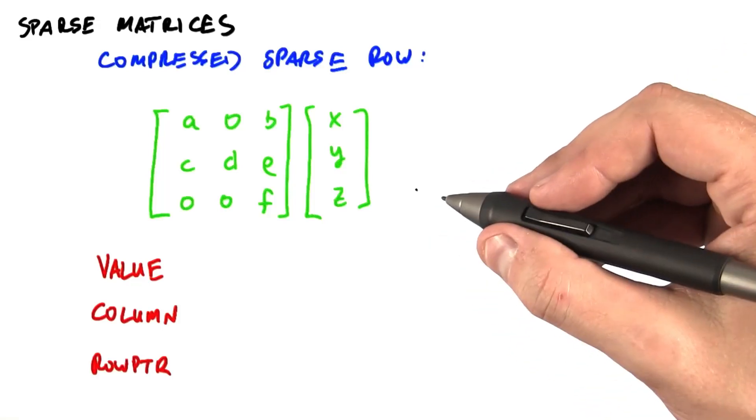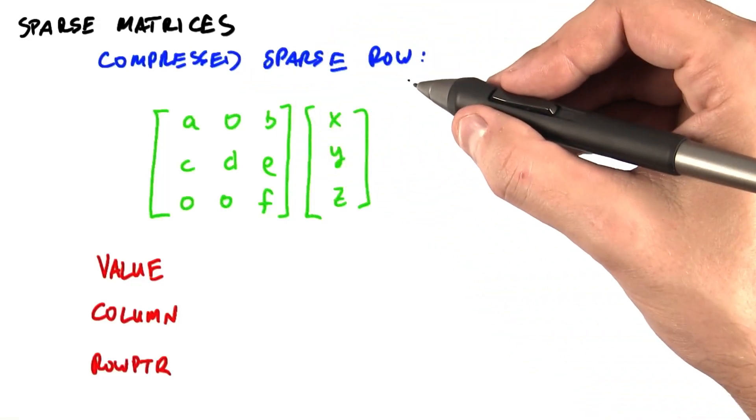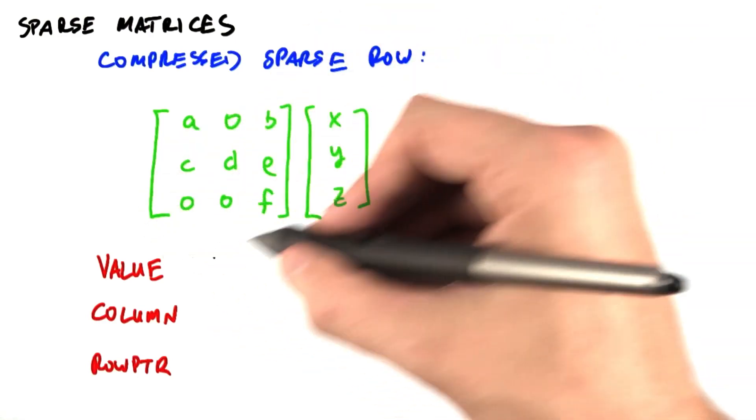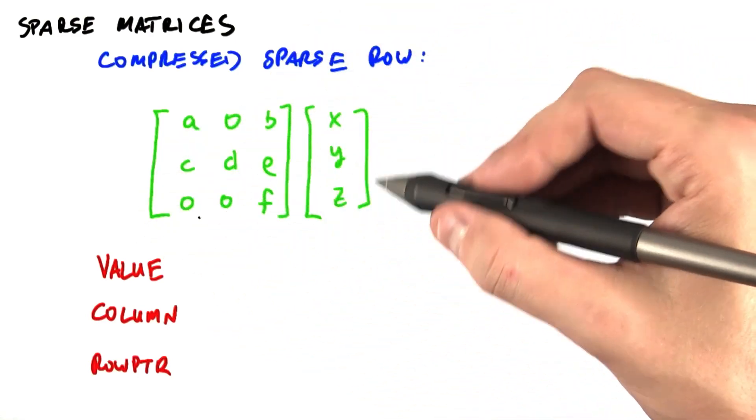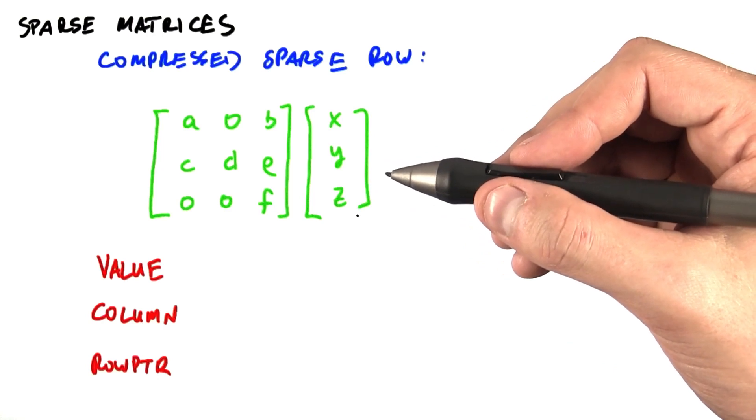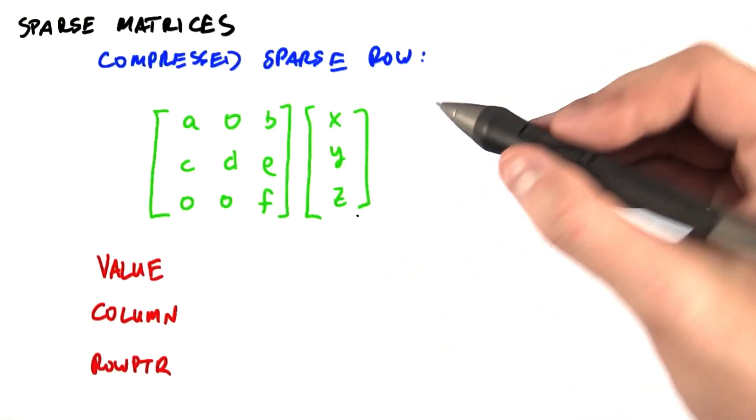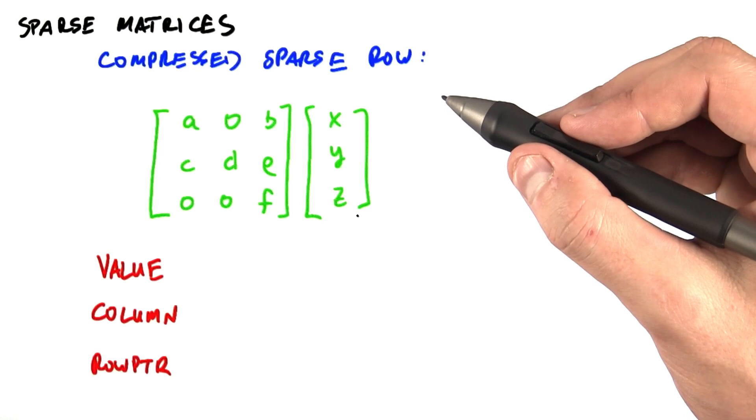The traditional way to represent a sparse matrix is what we call compressed sparse row. Here's a small matrix of 9 elements, 3 of them are zeros. We want some sort of representation that's going to squeeze out those zeros and only represent the values that are non-zero.